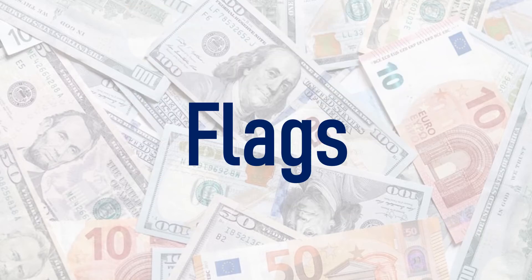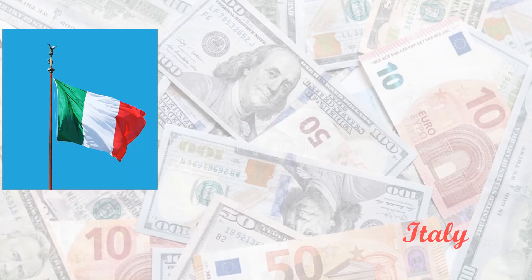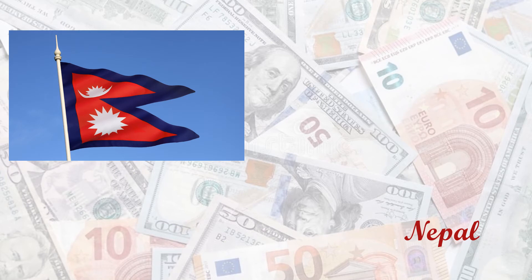Now we will learn about flags of different countries. This is the flag of Italy. You have to match this flag with Italy. See this? This is different — this is not rectangular in shape. This flag is related with Nepal. This is the flag of Nepal.